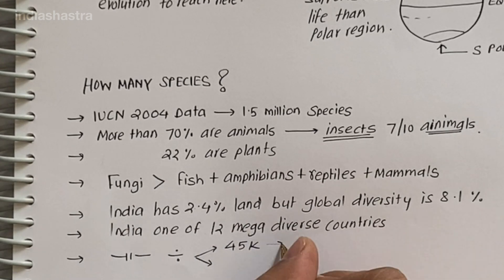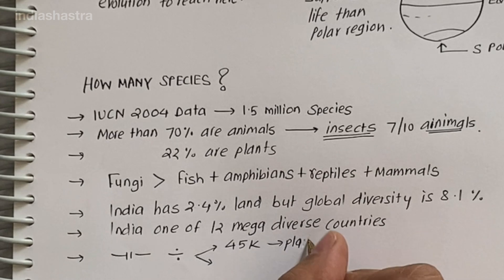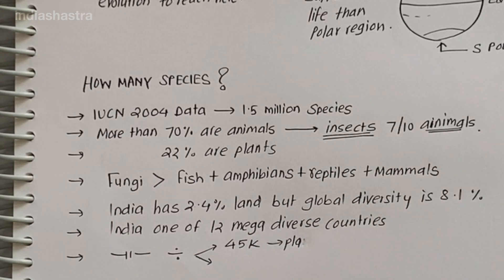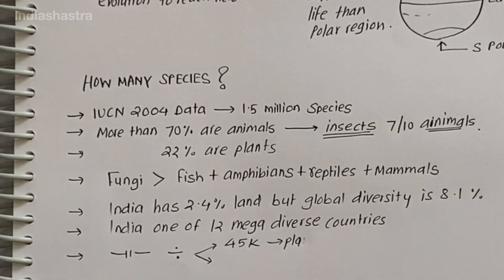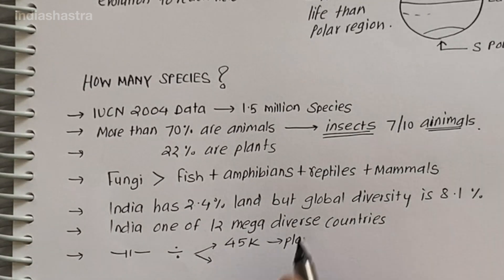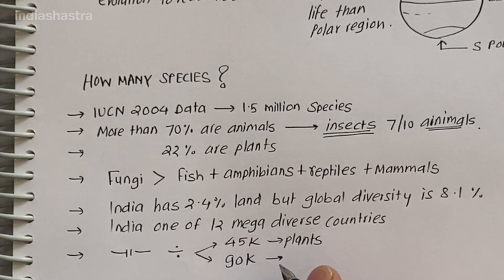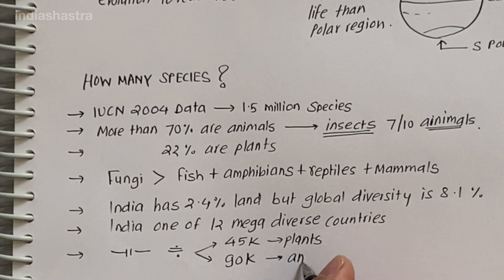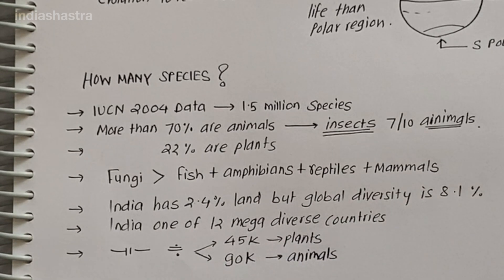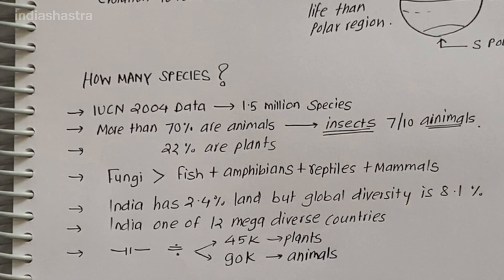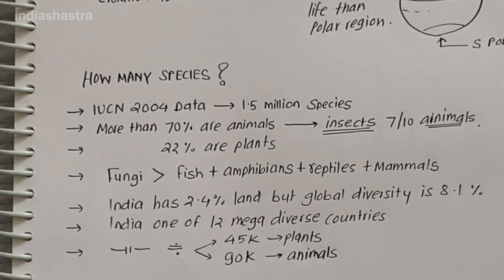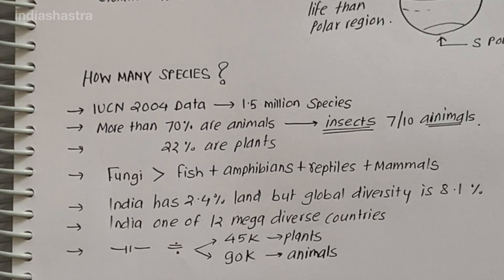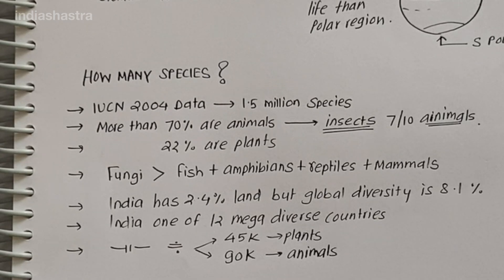If we accept more conservative global estimates, only 22% of the total species have been recorded so far. Probably more than 1 lakh plant species and more than 3 lakh animal species are yet to be discovered and described.